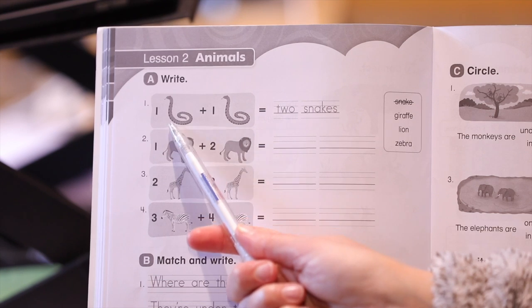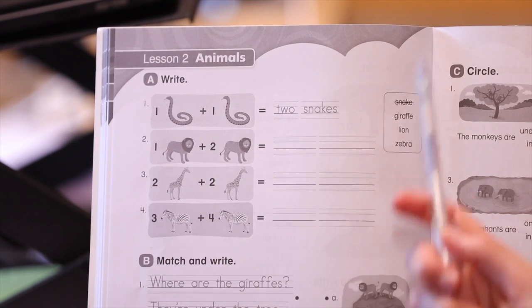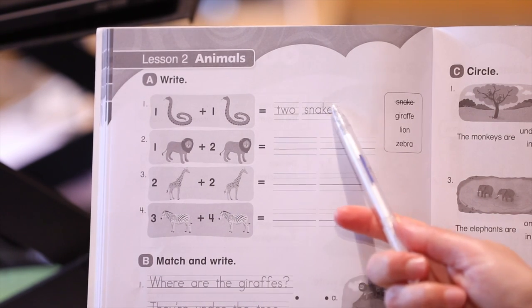Look at the example. One snake plus one snake equals two snakes.